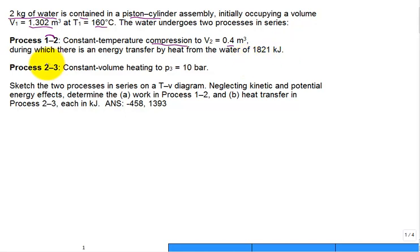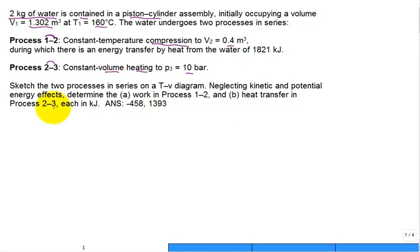The second process from state 2 to state 3 is constant volume heating to a final pressure P3 of 10 bar. We need to sketch the two processes on a T-V diagram, neglect kinetic and potential energy effects, and determine: A) the work in the process from 1 to 2, and B) the heat transfer in the process 2 to 3, both in units of kilojoules.